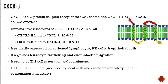CXCR3 is a G-protein coupled receptor that binds to its ligands CXCL4, 9, 10, and 11. In humans, three isoforms have been identified: A, B, and alternative. Isoform A binds to CXCL9, 10, and 11, while isoform B binds to CXCL4 along with CXCL9, 10, and 11. This receptor is expressed on activated lymphocytes, natural killer cells, and epithelial cells. It regulates lymphocyte trafficking and chemotactic migration, and polarizes towards TH1 inflammation. CXCL9, 10, and 11 are proposed to act as local signals creating an inflammatory niche in combination with CXCR3.